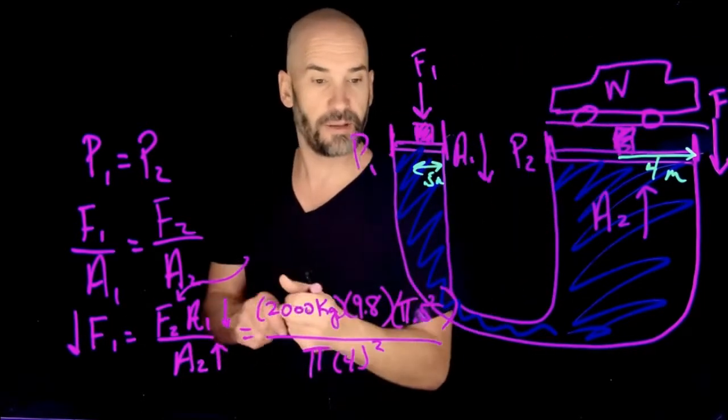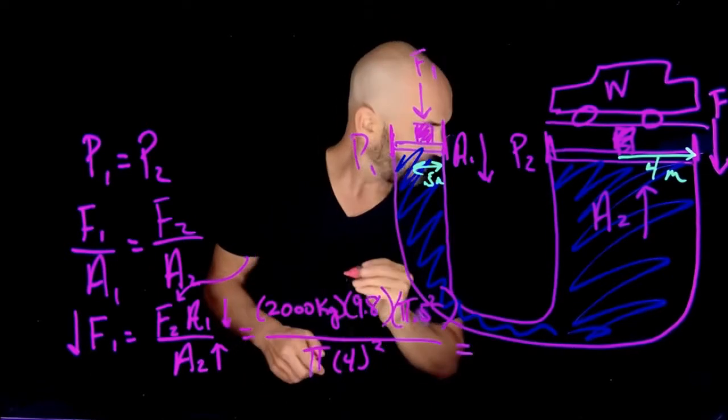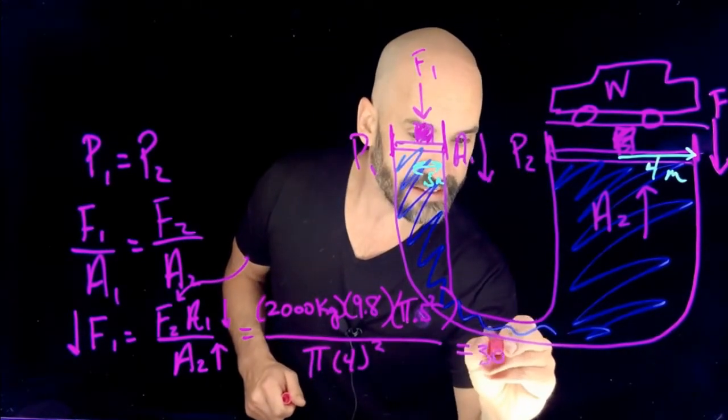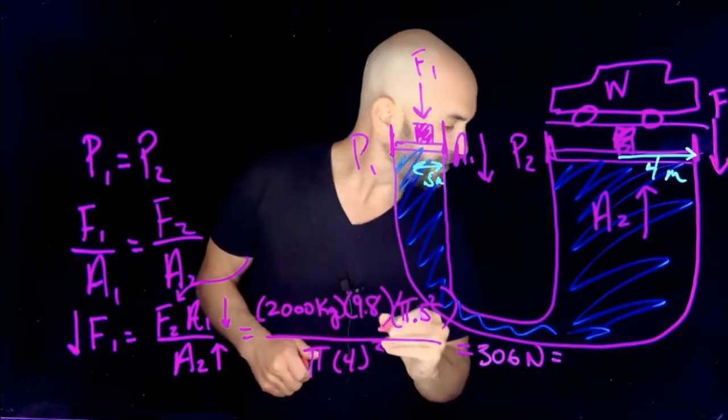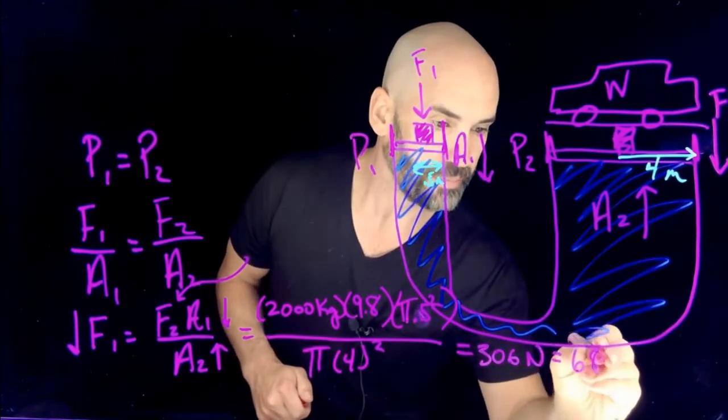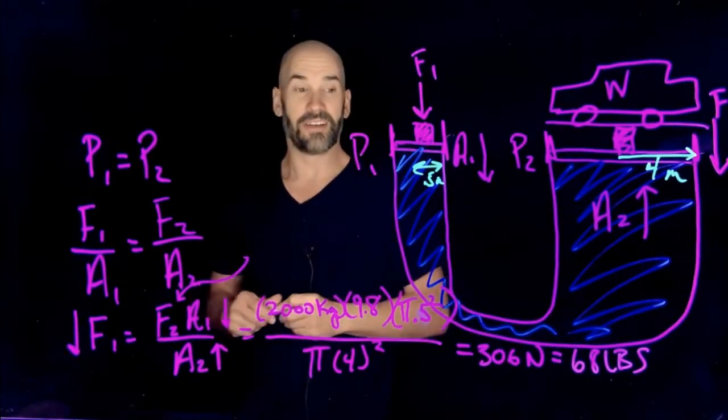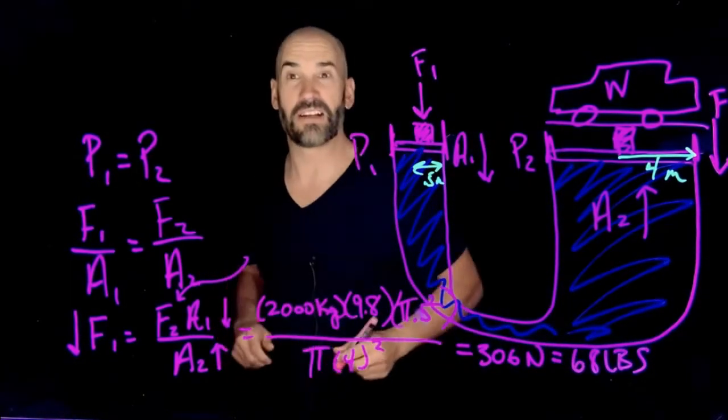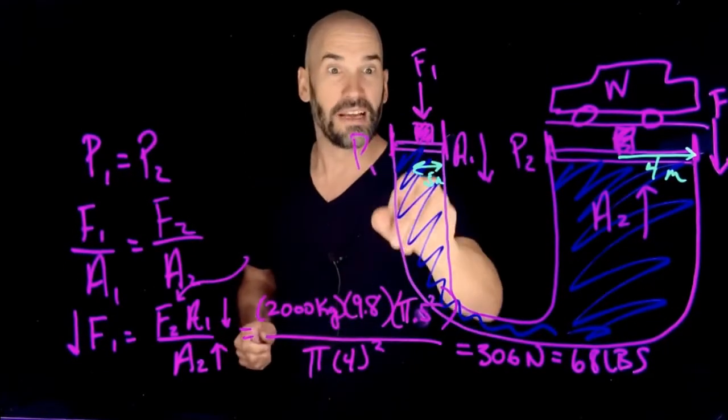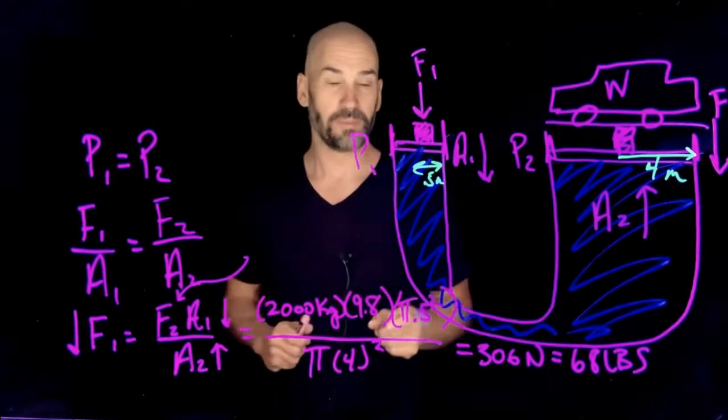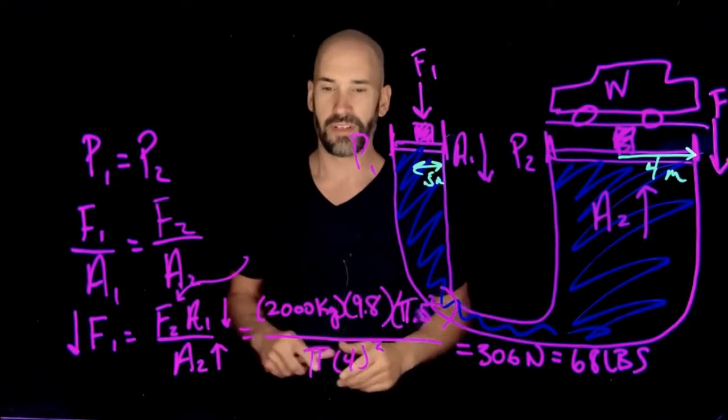And this is going to give me the force I need to push down, then, to be able to lift up that Tesla, and it turns out that I get 306 newtons, which is actually equal to only 68 pounds, which is nuts, because I weigh more than 68 pounds, which means that if I just stomped right there, I could actually begin to lift a Tesla, well, more than lift it, because I weigh a little bit more than 68 pounds.